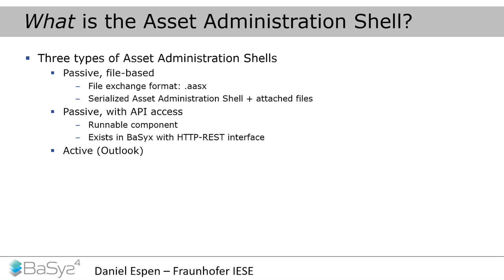This second type is still passive in the sense that the Asset Administration Shell doesn't do anything by itself. The third type is basically an outlook — still in development and discussion — where the Asset Administration Shell would actively talk with other Asset Administration Shells to get services and really do something on its own. In BaSyx we mainly talk about the second type of Asset Administration Shell: a server with API access.